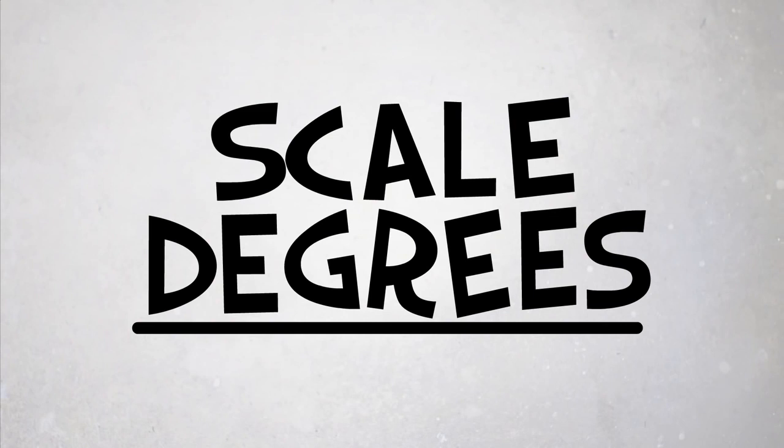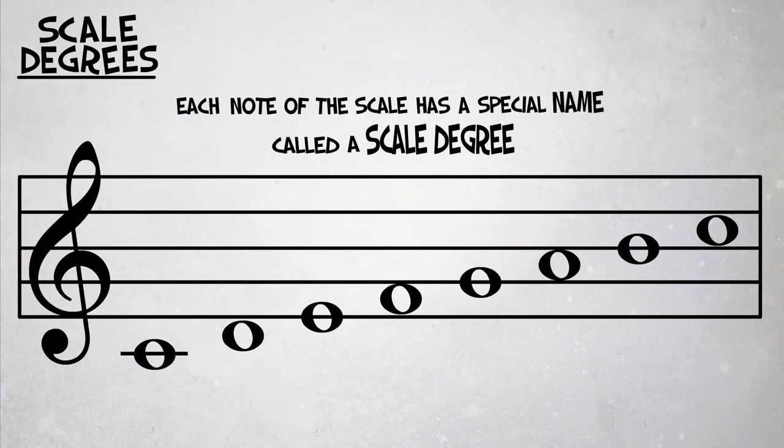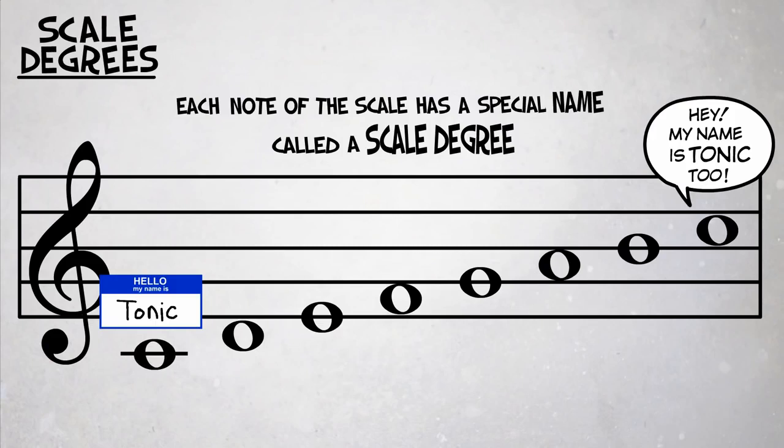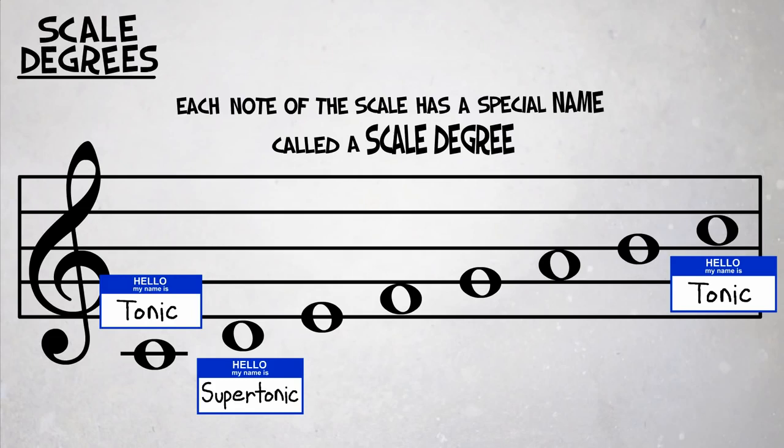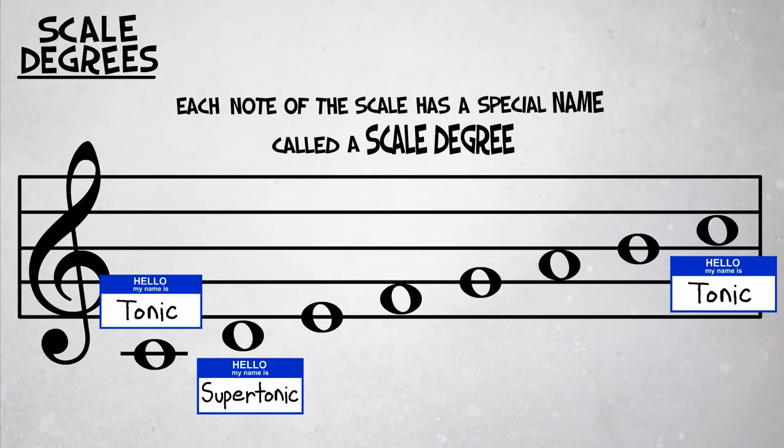Scale degrees: Each note of the scale has a special name called a scale degree. Tonic (1), supertonic (2), mediant (3), subdominant (4), dominant (5), submediant (6), leading note (7). The most important in music are the first, fifth, and fourth degrees.